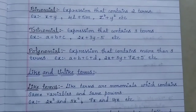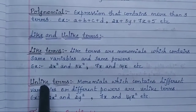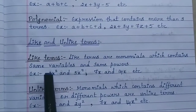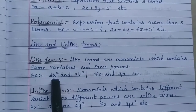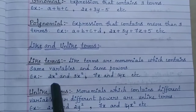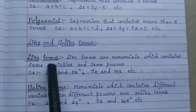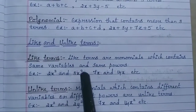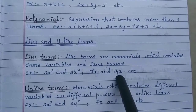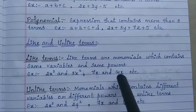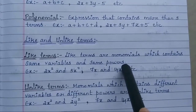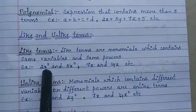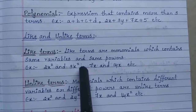Next are like and unlike terms. Like terms are monomials which contain the same variable and the same power. For example, 2x² and 3x² are like terms because the variable is x and the power is 2 in both. Similarly, 7x and 14x are like terms — same variable x with power 1 in both cases. You can add or subtract like terms.